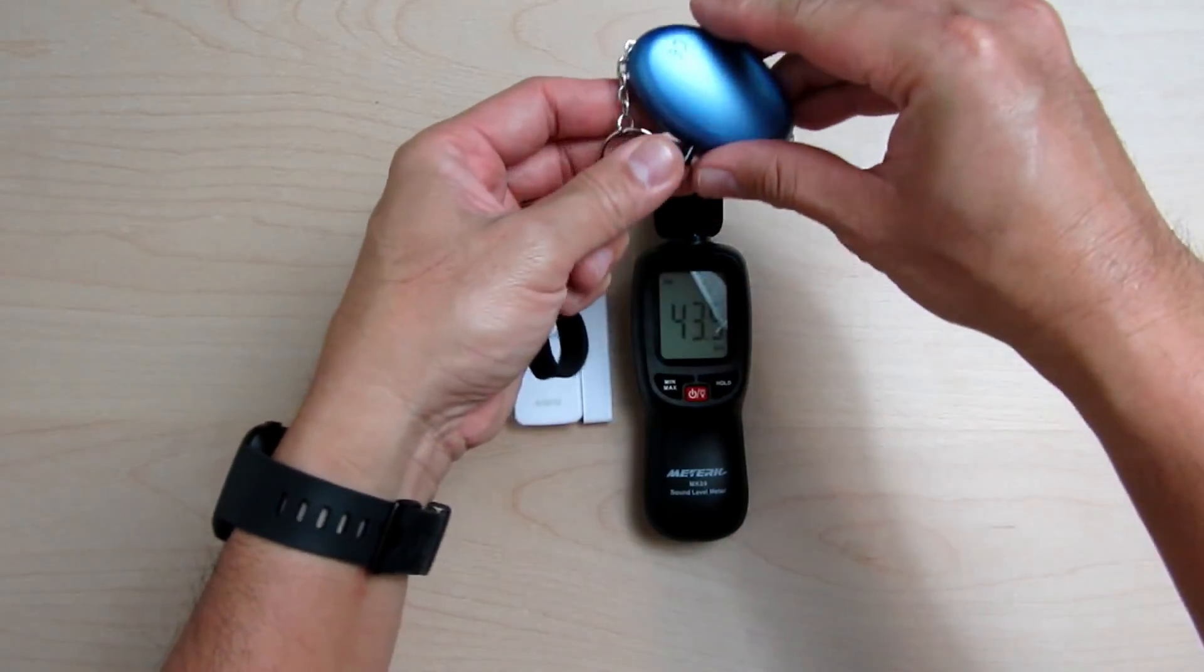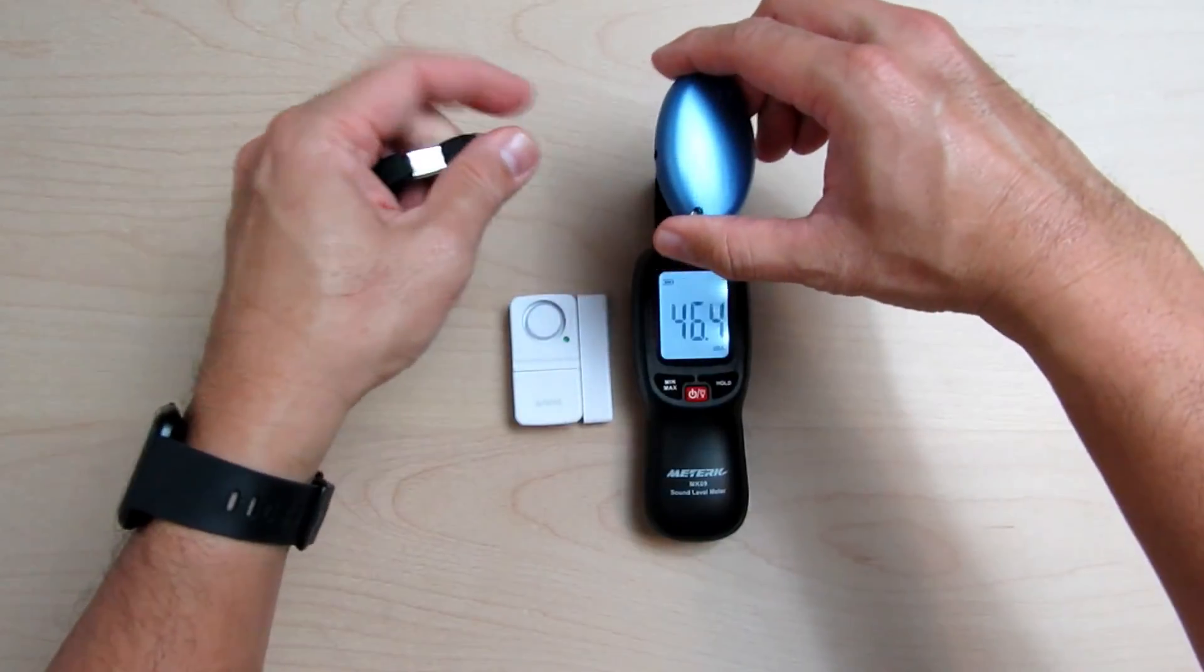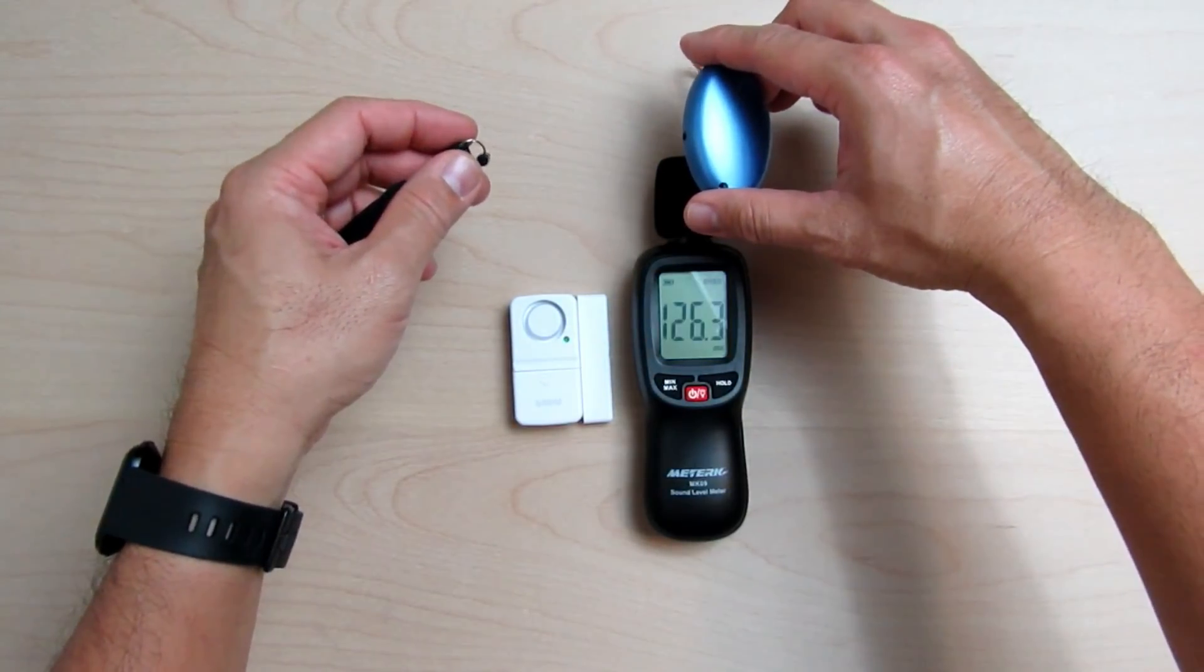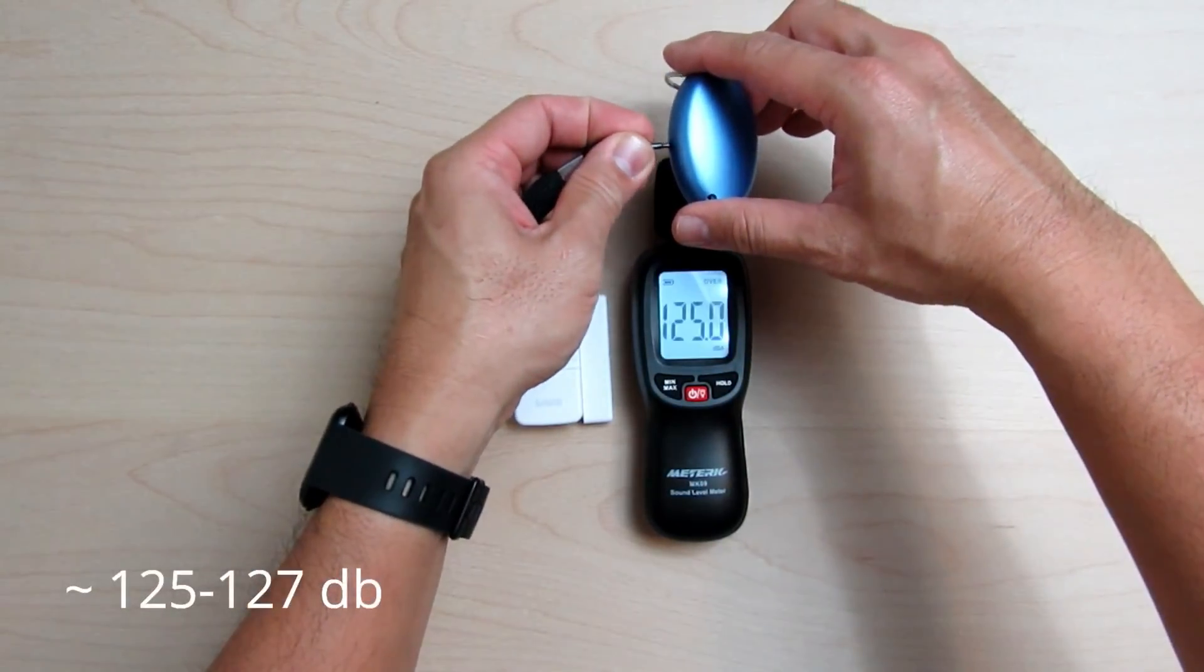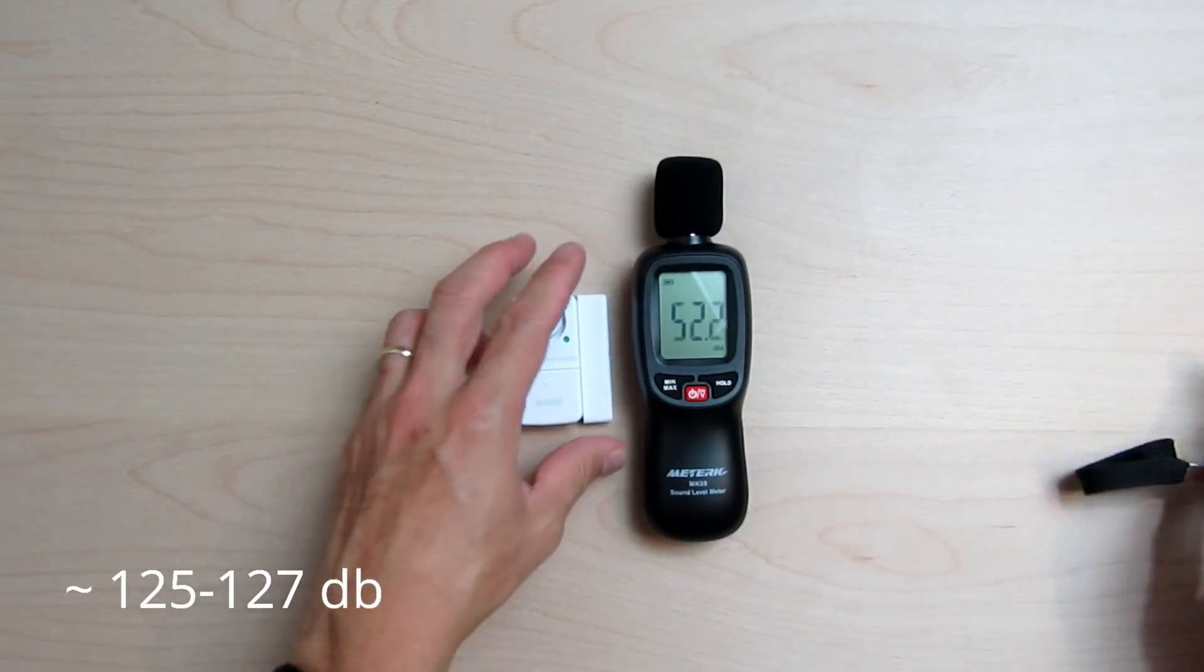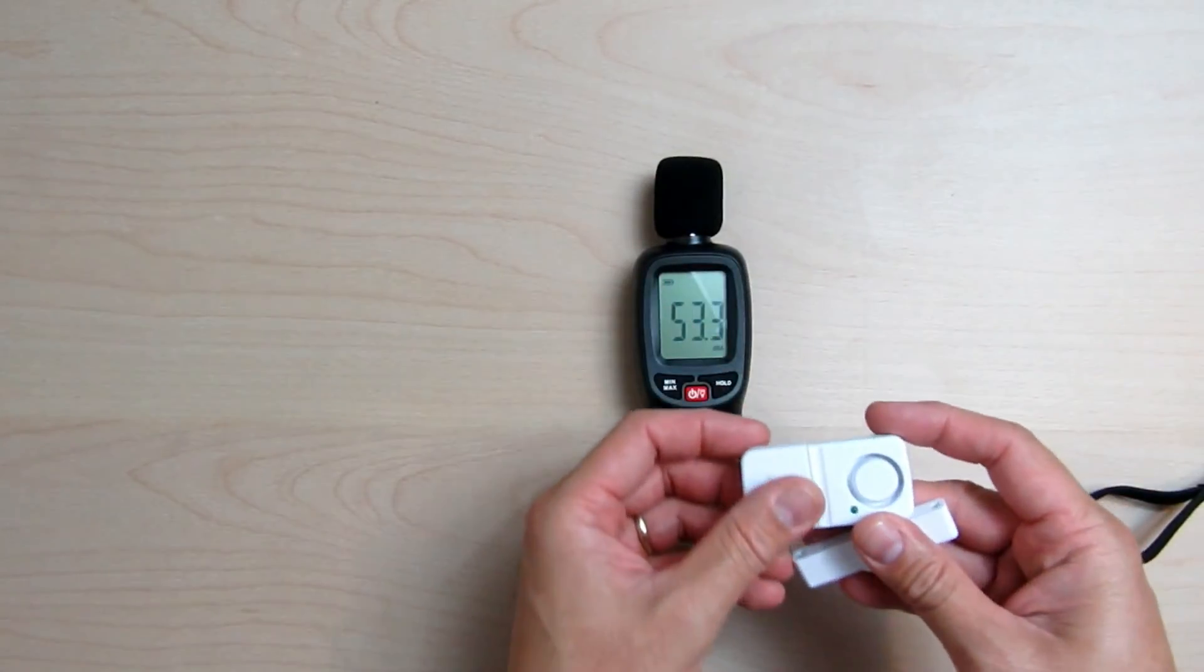The personal alarm has basically a pull pin that when pulled out, the alarm will go off. The window sensor will activate when the little sensor part is away from the main unit.